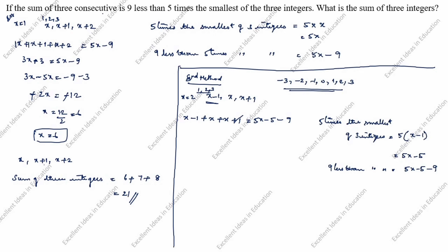The plus 1 and minus 1 cancel, leaving 3x equal to 5x minus 14. Bringing 5x to the left: 3x minus 5x is minus 2x, equal to minus 14. Cancelling the negatives, x equals 14 divided by 2, which equals 7.